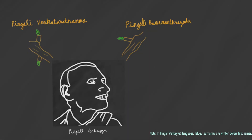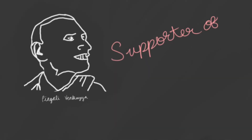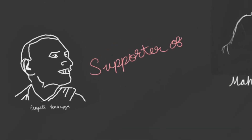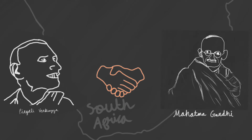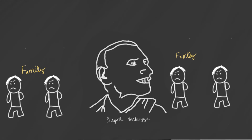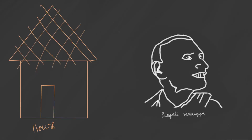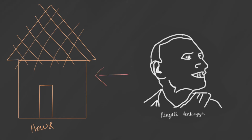Pingali Vankaya was born near Machilipatnam in Andhra Pradesh to Pingali Hanumantrayudu and Vankara Ratnamma on August 2nd, 1876. As a teenager he was a supporter of Mahatma Gandhi and had the opportunity to meet him when he was serving in the British Army in the South African War around the turn of the century. However, his family wasn't supportive of him going to South Africa, and he wasn't allowed inside the house after he returned.